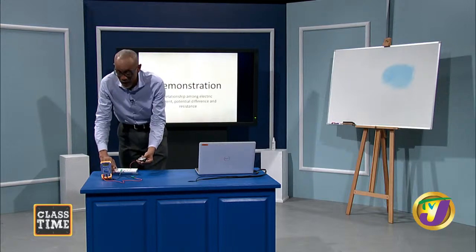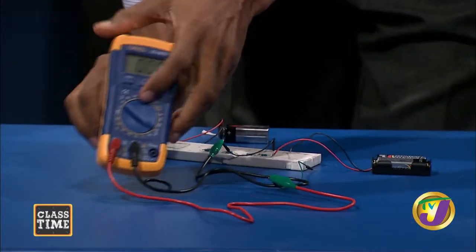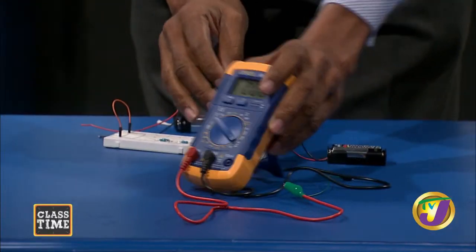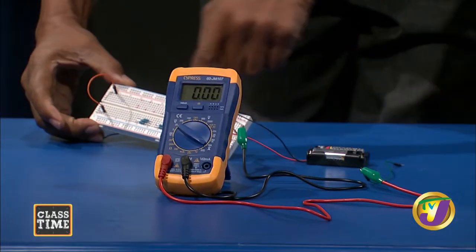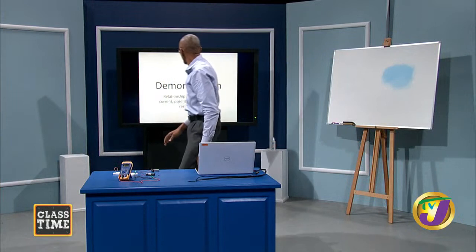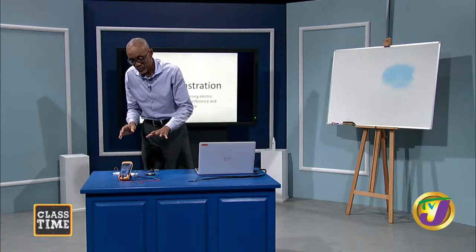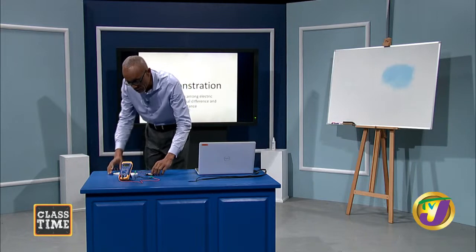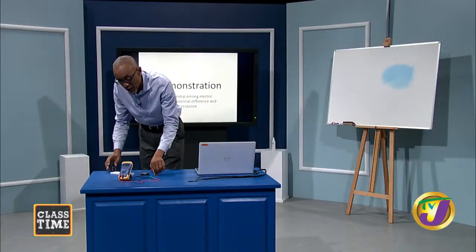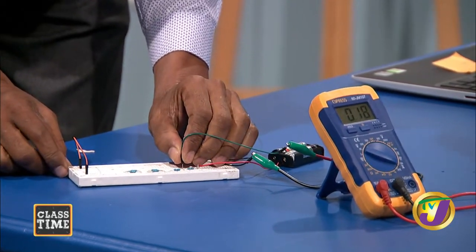I have here a pair of cells which will provide my potential difference. I have here a measuring device, which is an ammeter, which will tell me what the current that is flowing will be. I have here a circuit board with some resistors. The first thing we will look at is the relationship between potential difference and current. These two batteries add up to three volts, so I'm going to put three volts of potential difference and read the current flowing through.